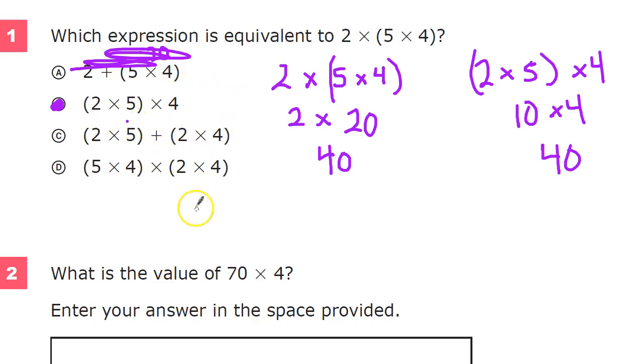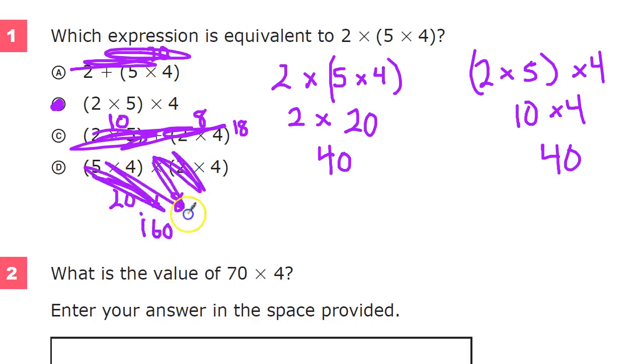Now, 2 times 5 plus 2 times 4. So we'll try this. 2 times 5 is, of course, 10. 2 times 4 is, of course, 8. And 10 plus 8 is equal to 18. That's nothing. And this other one is gigantic. 5 times 4 is 20. 2 times 4 is 8. 20 times 8, well, 8 times 2 is 16. I'll just tab that 0 on at the end there. That's not 40 either.